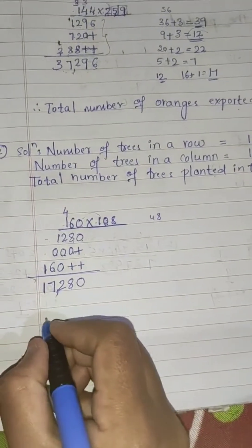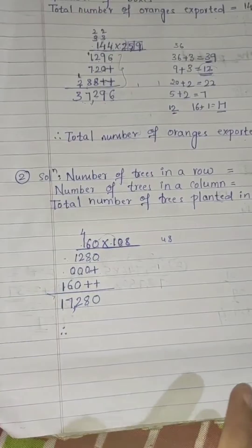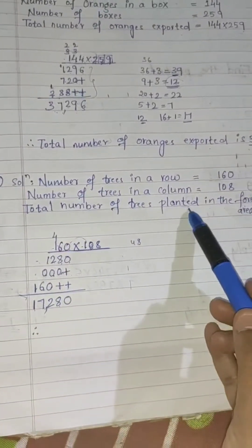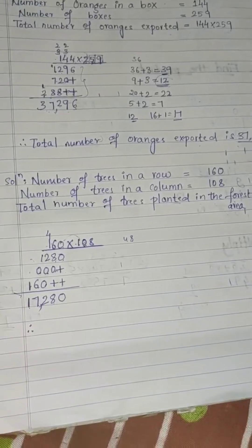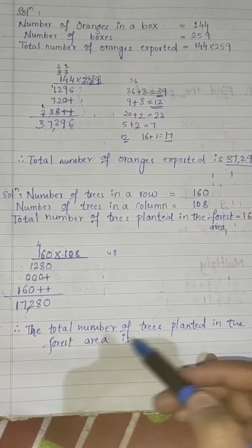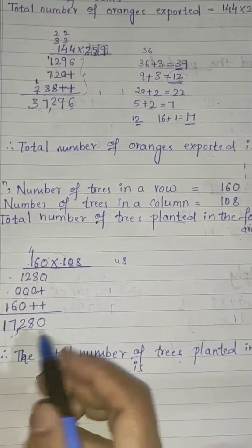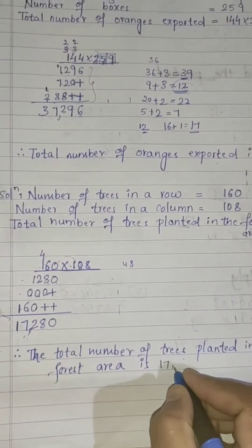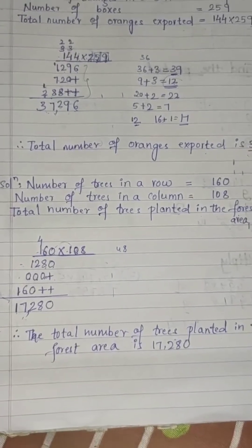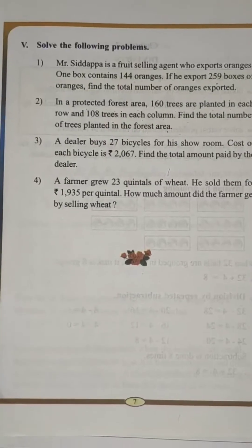Therefore, the total number of trees planted in the forest area is 17,280. Understood? Yes.